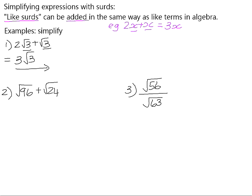In number 2, you cannot add these two surds in their current form because the square root of 96 is not the square root of 24. But if you were to simplify these surds, you might find that you get to have like surds in those two terms.